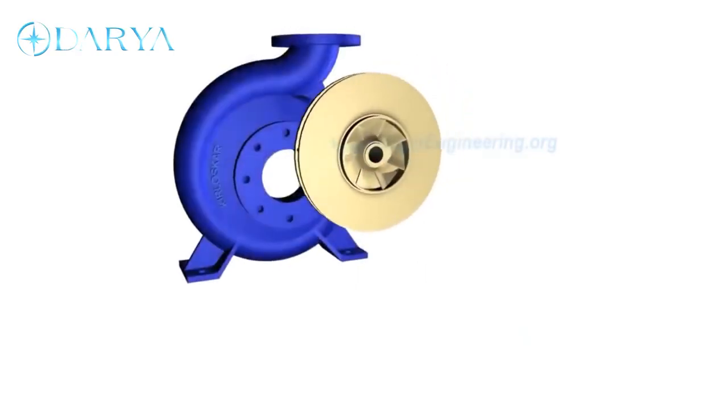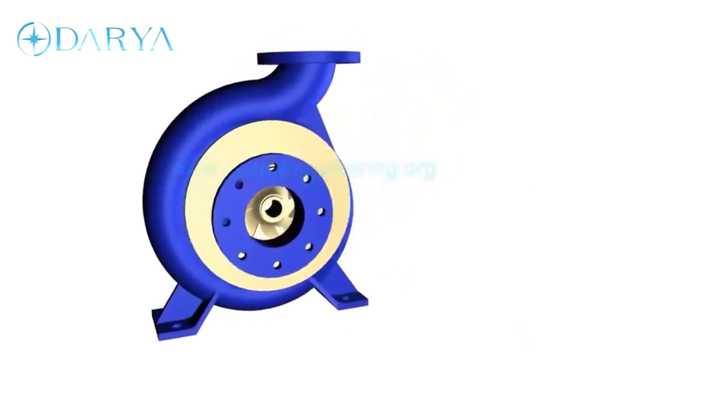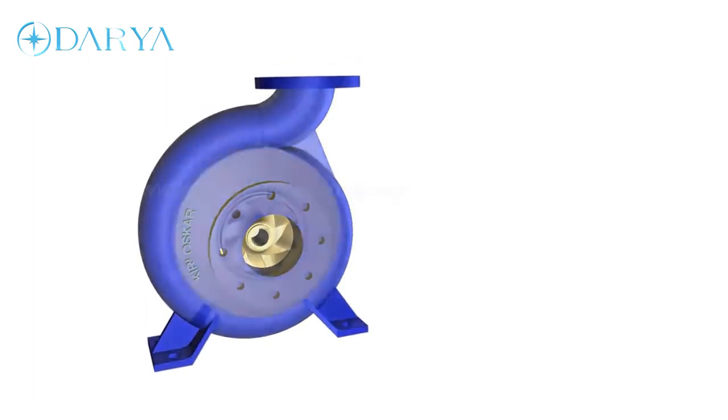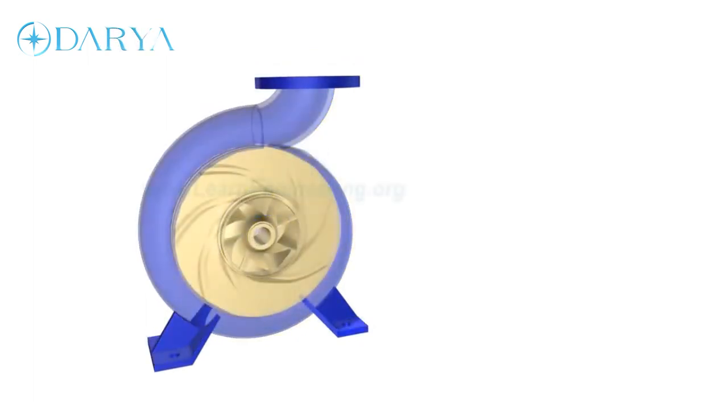Impeller is fitted inside a casing. So the water moving out will be collected inside it, and will move in the same direction of rotation of impeller to the discharge nozzle.